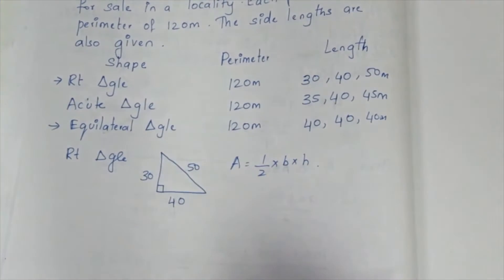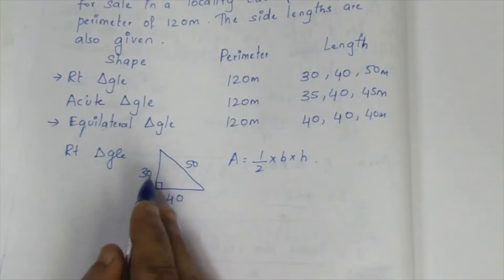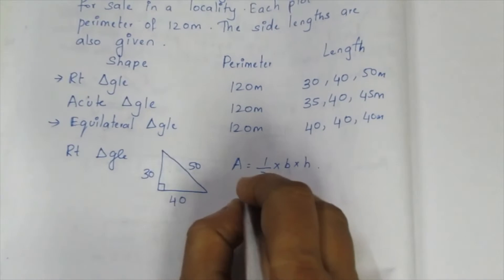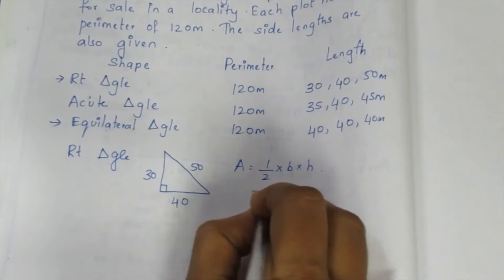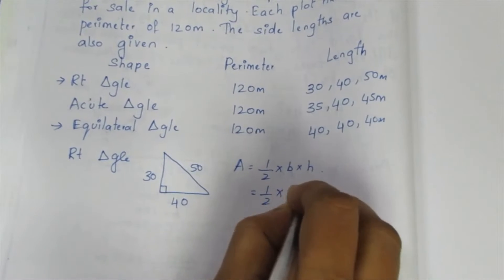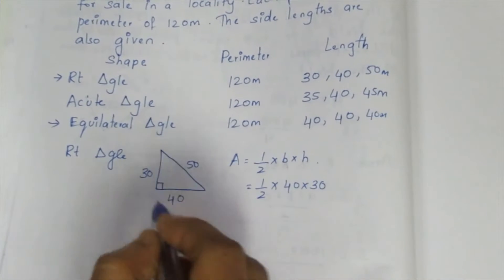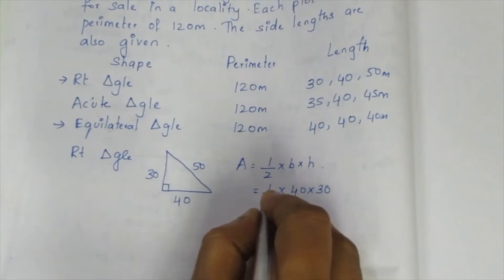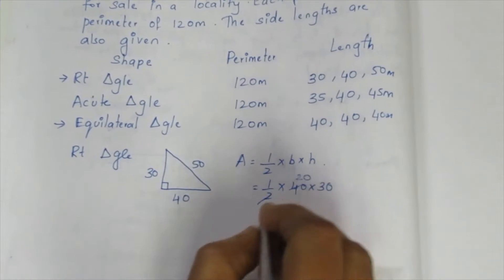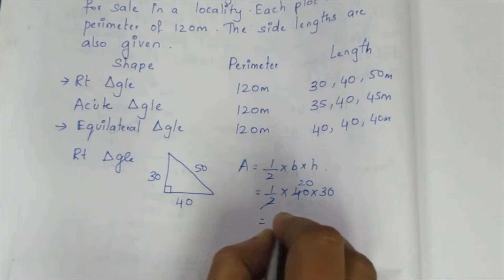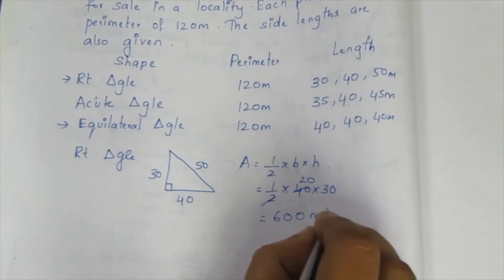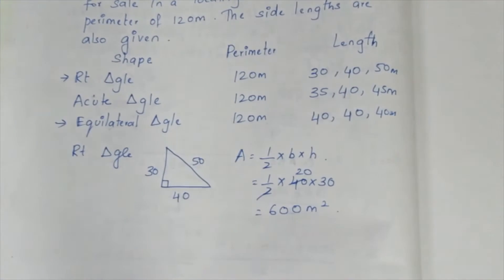For the right triangle with a 90-degree angle, the area is one-half into base into height. So area = (1/2) × 40 × 30. The twos cancel: area = 20 × 30 = 600 m².